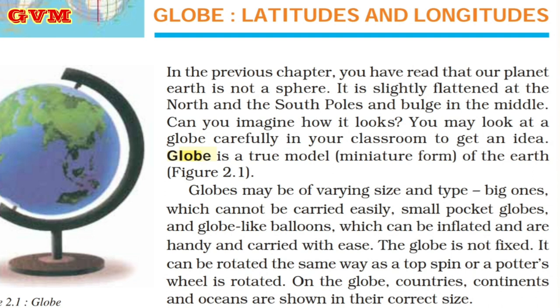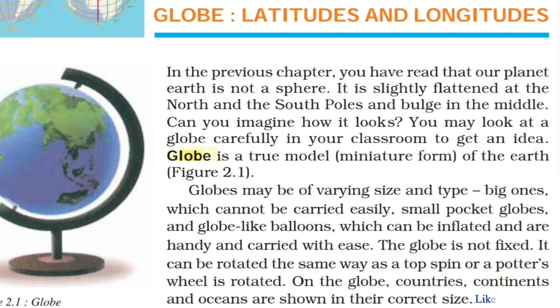In the previous chapter you have read that our planet Earth is not a sphere. It is slightly flattened at the north and the south pole. You may look at a globe carefully in your classroom to get an idea of how it looks.